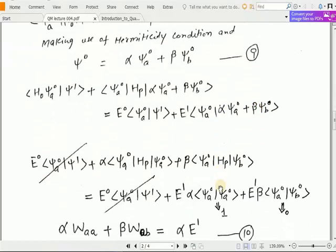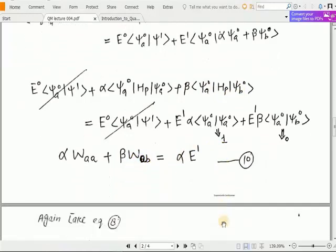Now simplify the left hand side. The operator operates on the wave function, we will get this form E^0⟨ψ_a^0|ψ^1⟩. This term will cancel on the right hand side with this part E^0⟨ψ_a^0|ψ^1⟩. The remaining two terms on the left hand side have alpha and beta. This term goes to 0 and this term goes to 1, so right hand side is α times E^1.